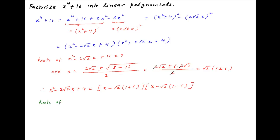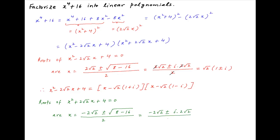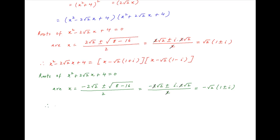Next we determine the roots of the quadratic equation x² + 2√2·x + 4 = 0. The roots are [-2√2 ± √((2√2)² - 4·4)] / 2, equal to [-2√2 ± i·2√2] / 2. Two cancels, and therefore the roots are -√2·(1 ± i). So x² + 2√2·x + 4 factorizes into (x + √2·(1 - i))(x + √2·(1 + i)).